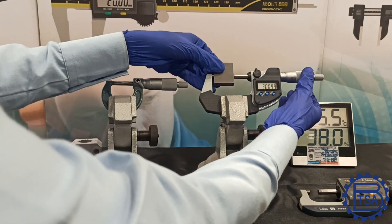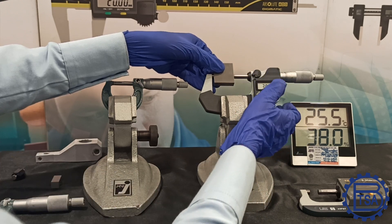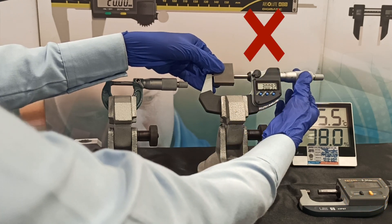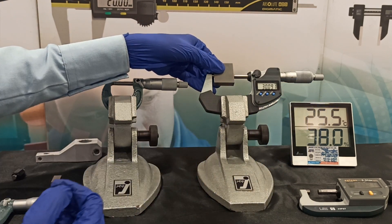Otherwise, the spindle might move and cause error in the readings. One of the most important precautions is to avoid over-tightening of the thimble, which could damage either the micrometer or the item clamped between the spindle and anvil.